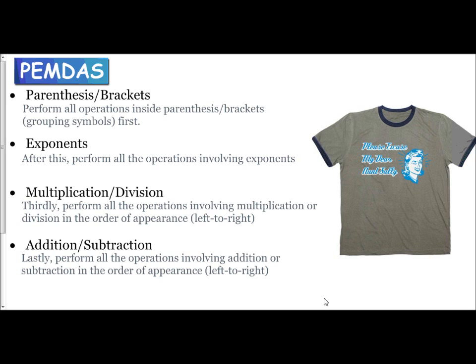The last part is addition and subtraction, which follows the same idea as multiplication and division — you do those in the order they appear from left to right. The reason is the same: I can turn addition into subtraction by adding a negative number, and I can turn subtraction into addition by subtracting a negative number. Since they are inverses, we do them in the order they appear from left to right.